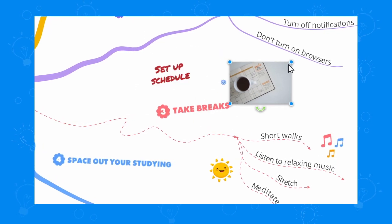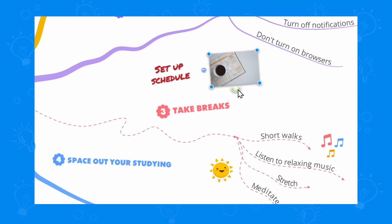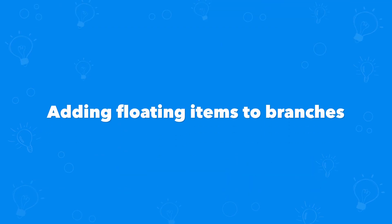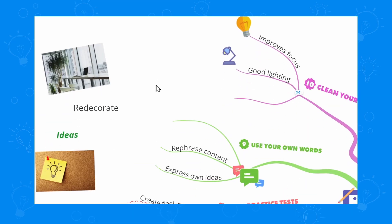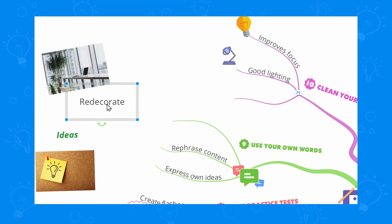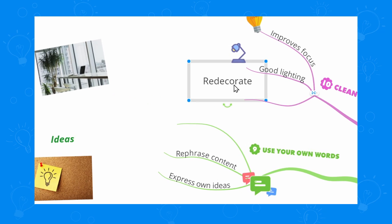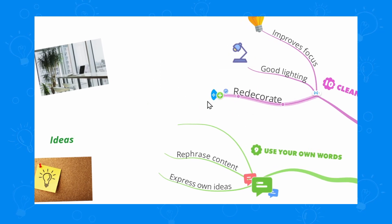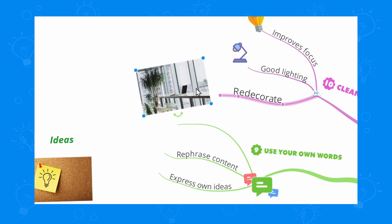The floating text and images are great because you can add ideas to your mindmap even if you don't know where they should go. But if you want to organize them, you can add them to any branch by dragging and dropping. This takes the mindmapping experience to a whole new level, allowing you to store ideas anywhere on the map, ready to be used at any point.